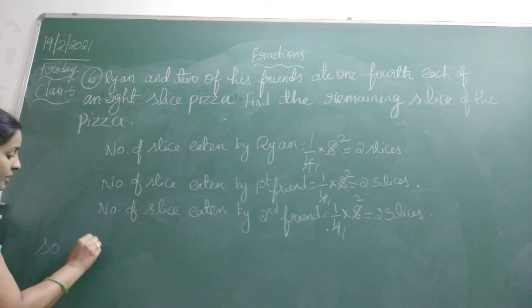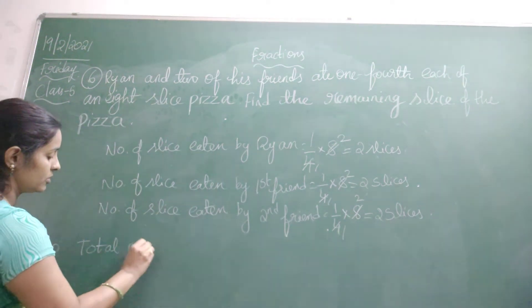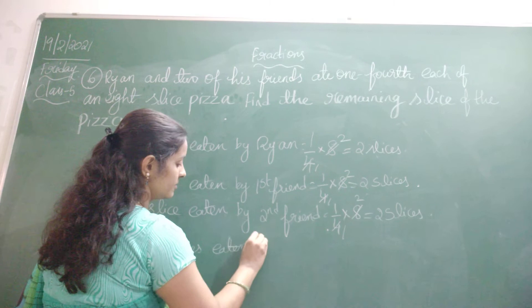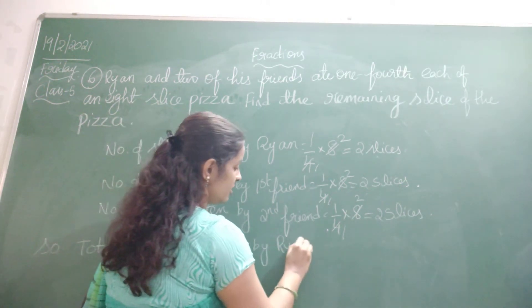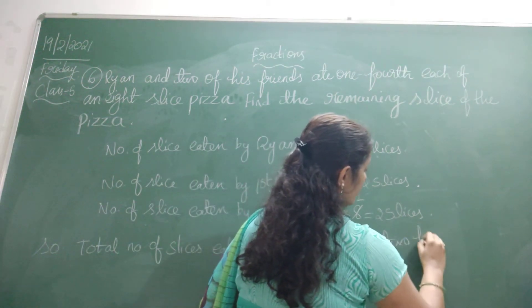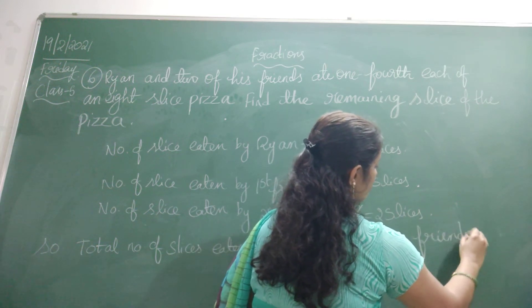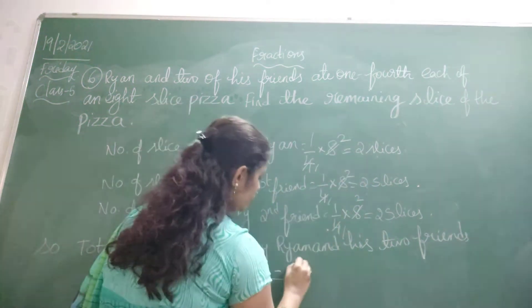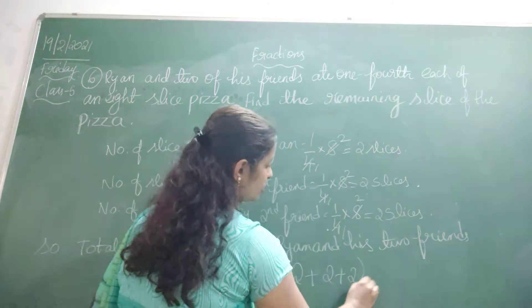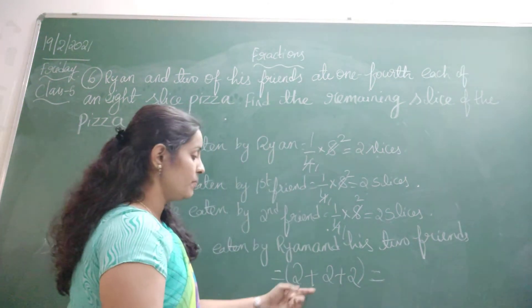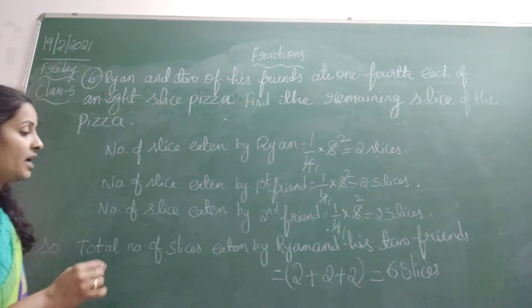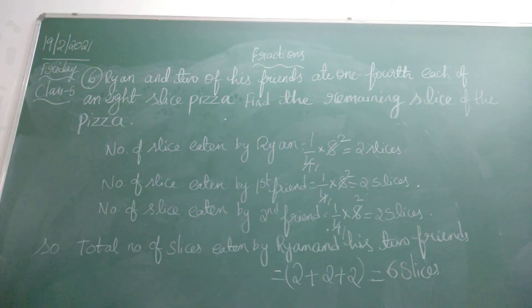Total number of slices eaten by Rayyan and his two friends: Rayyan ate two slices, plus his two friends ate two slices each. So the total is two plus two plus two, that is six. Rayyan and his friends together ate six slices of pizza.